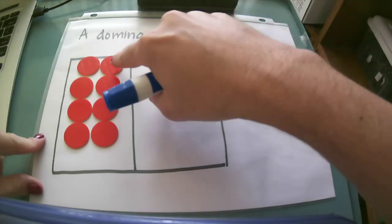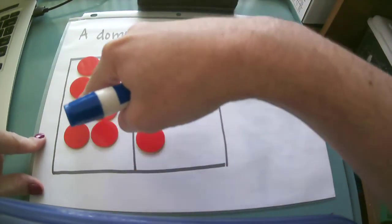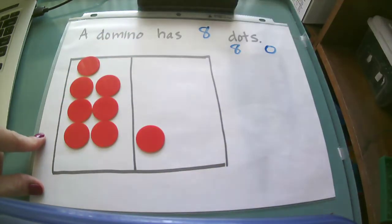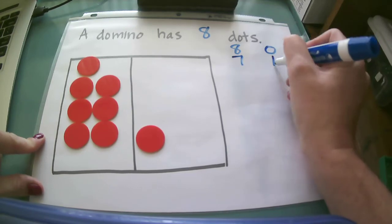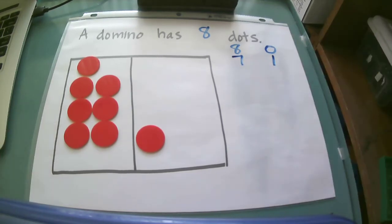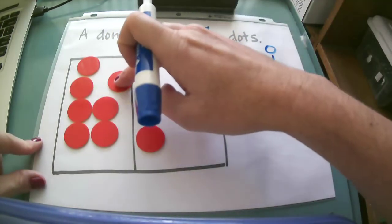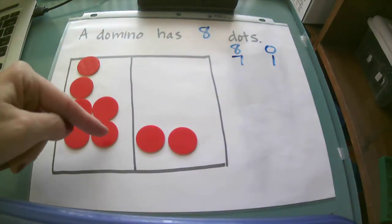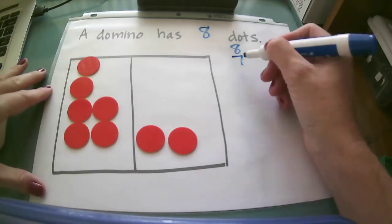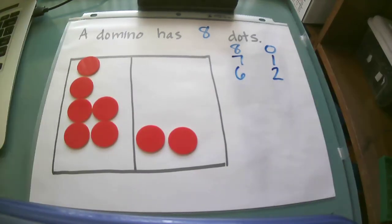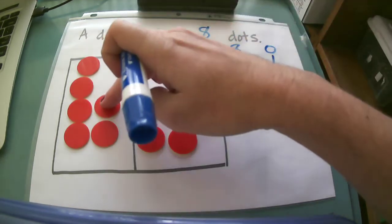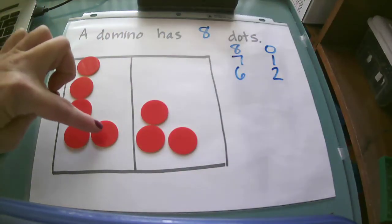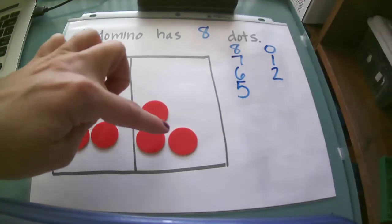If I take one away from eight, this leaves me with seven — one, two, three, four, five, six, seven — and then I have one here, which shows me the number partners for eight could be seven and one. If I take another away I have six — one, two, three, four, five, six — and two. So number partners for eight could be six and two. Continuing the pattern: five and one, two, three.